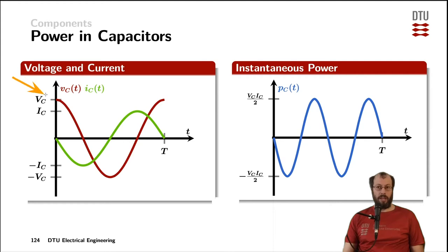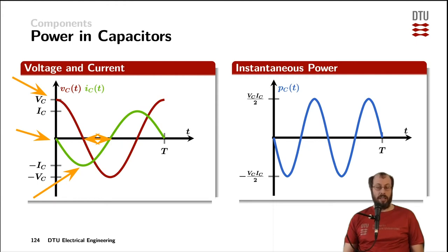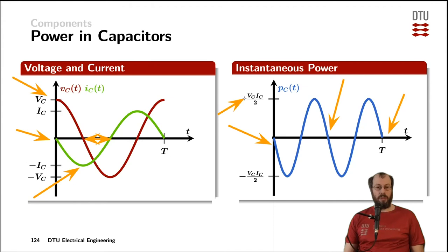Equivalently, we have the voltage across the capacitor as a cosine wave starting at its amplitude, and the current as a minus sine wave reaching its peak at the peak current of the capacitor. Again, the voltage and current are shifted by 90 degrees from each other, but in this case the current is ahead by 90 degrees — the current is leading. Due to the minus sign for the current, the power also gets a minus sign for its sinusoidal waveform at twice the frequency, repeating after half of the period T, with amplitude defined by the voltage amplitude times the current amplitude divided by a factor of 2.